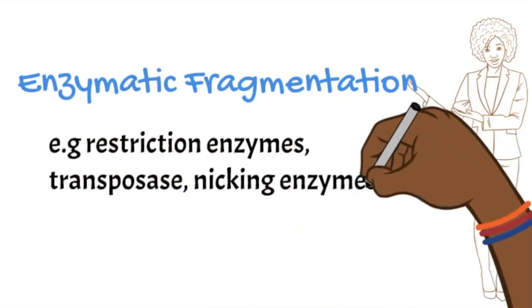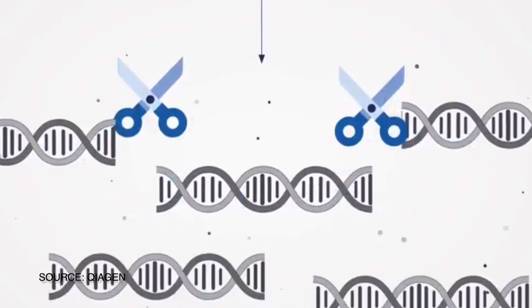If you go with restriction enzymes, the enzymes you select may either cut both strands of double-stranded DNA, so restriction endonucleases,